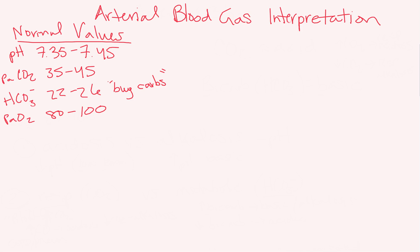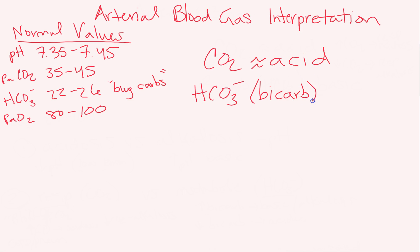For the purpose of this video and memorizing how to interpret ABGs, remember that carbon dioxide CO2 is like an acid. For any chemistry people, CO2 isn't actually an acid, but for ABG purposes it acts like an acid. CO2 is like an acid and bicarbonate HCO3 is like a base — it actually is a base. If you're having trouble remembering which is acid and which is base, remember B bicarb, B base. So bicarb is your base and therefore CO2 is your acid.